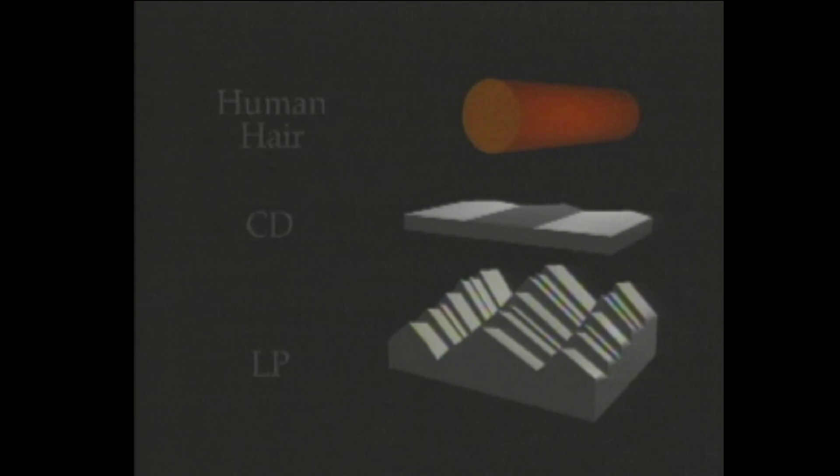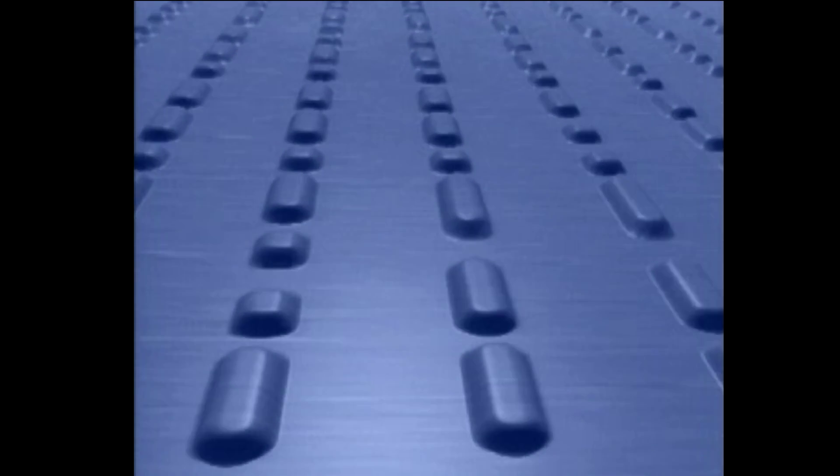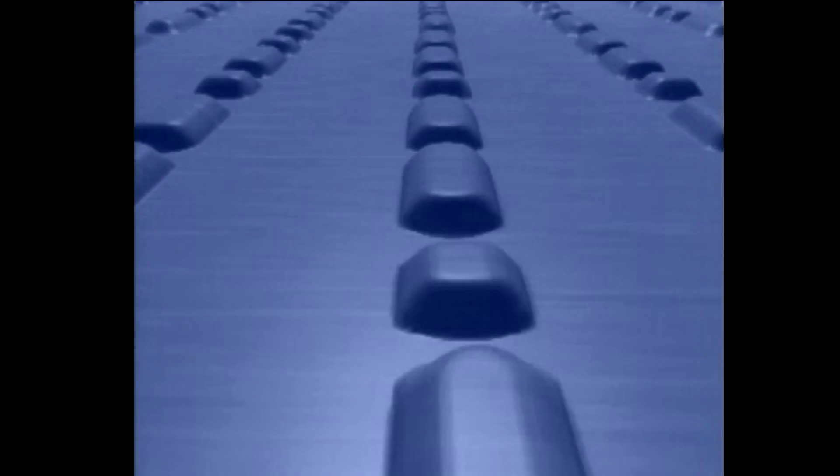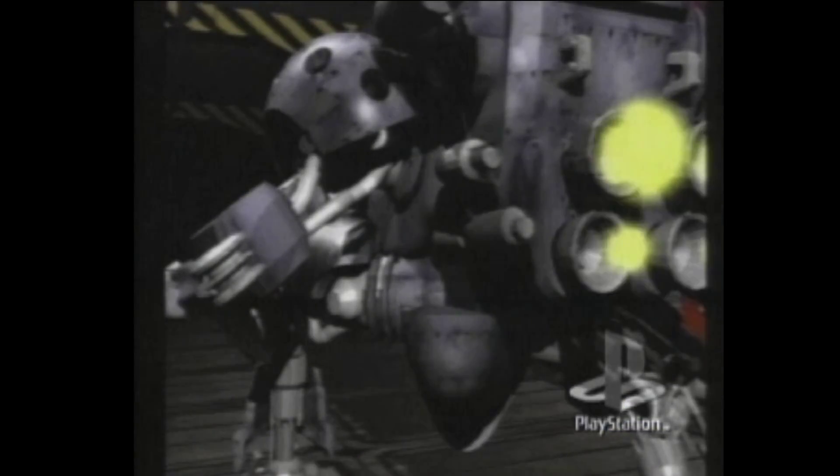This track is so narrow that a single strand of your hair would cover 40 of its rings. A laser in your PlayStation reads the track, and computer chips convert the zeros and ones into the graphics and sound of your game.